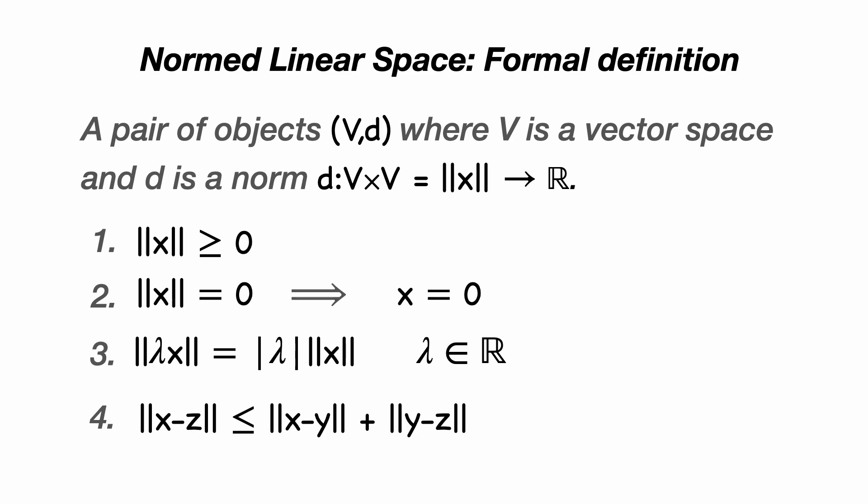So if we have three vectors x, y, and z, then the norm of x minus z is less than or equal to the norm of x minus y plus the norm of y minus z.